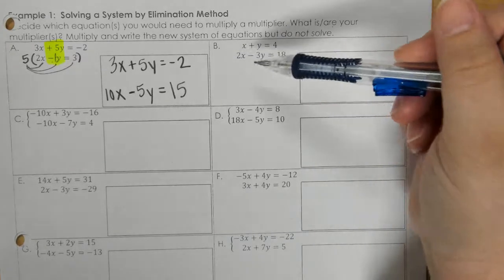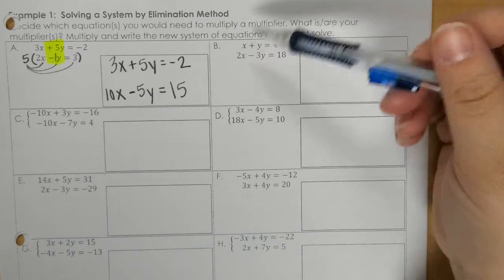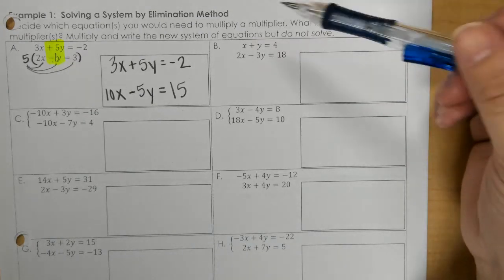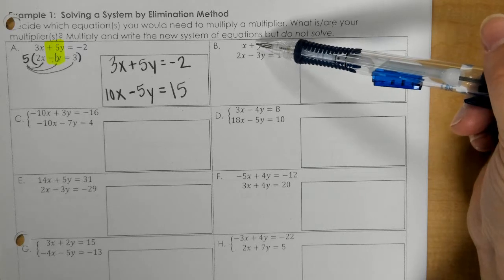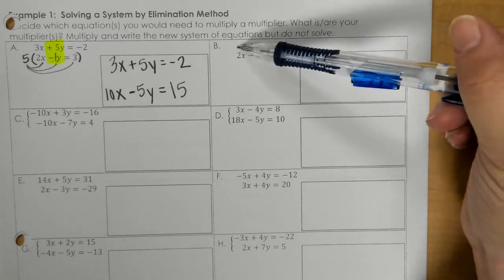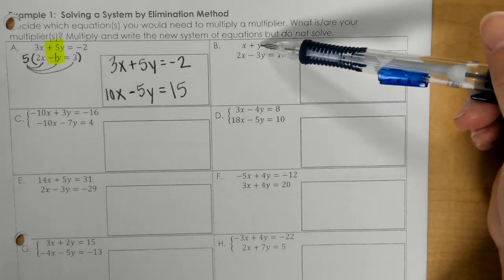So I have a 1x and I have a 1y. I am going to pick the y. You can pick either one, but I am going to pick the y.